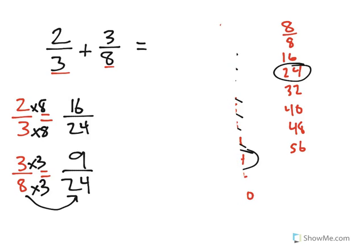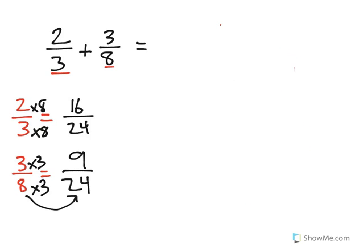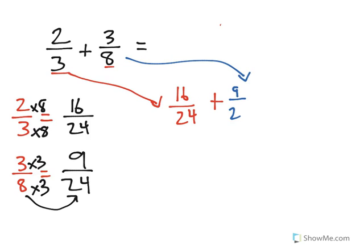Now what we have here is we have two equivalent fractions, which means these fractions are actually the exact same as 2 thirds and 3 eighths. We're just using different numbers to represent them. So, 2 thirds was equal to 16 24ths. So I'm going to go ahead and say instead of 2 thirds, I'm going to have 16 24ths. And then I'm going to say 3 eighths was the same as 9 24ths. And I'll add that in.